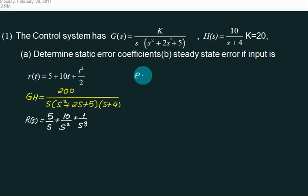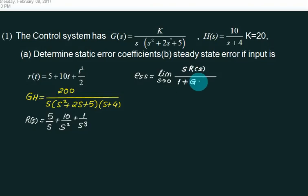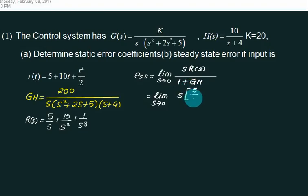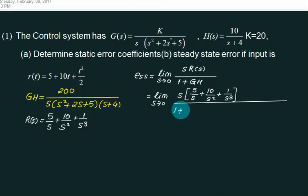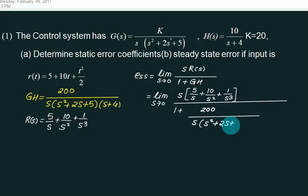Now define ESS. The basic definition is: ESS = limit s→0 of s · R(s) / (1 + GH). Equals limit s→0 of s times bracket [5/s + 10/s² + 1/s³] divided by [1 + 200 / (s(s²+2s+5)(s+4))]. The denominator of the denominator comes to the numerator. Do not expand — take s·(s²+2s+5)·(s+4) into the numerator. Now observe: this s, and this s, and this s will force the total value to 0. But we can take out s-squared as common.